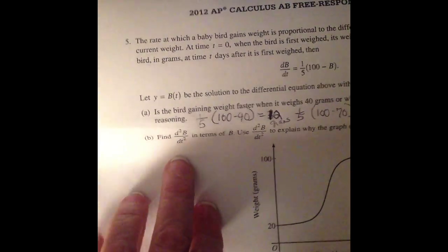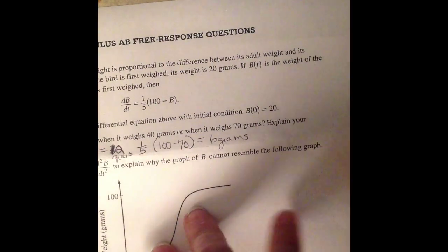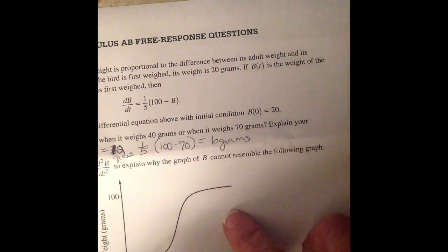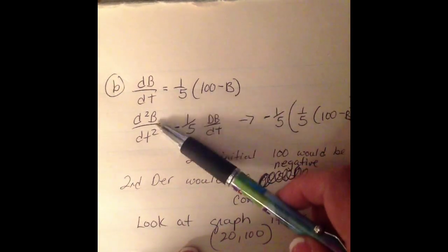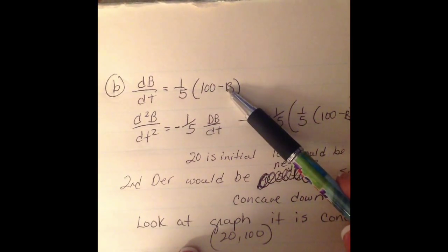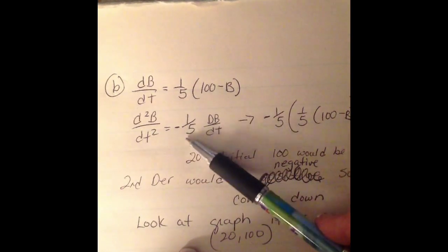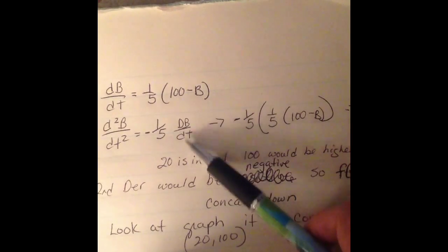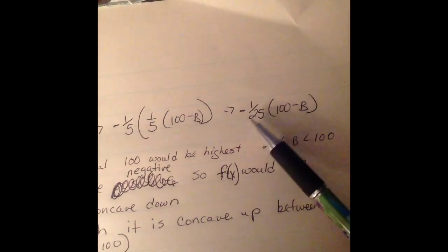Now let's look at (b). Find the second derivative and explain why this graph cannot resemble, why your correct graph could not resemble this graph. So let's look at what we're going to do. So we've got the derivative. We're going to take the second derivative. So if you take the derivative of a constant, it's going to go away. If you take the derivative of -1/5 b, it's going to be -1/5 db/dt. Because remember this is like related rates. If it's not at x, we're taking the derivative. So then I'm going to substitute the original in for db/dt.